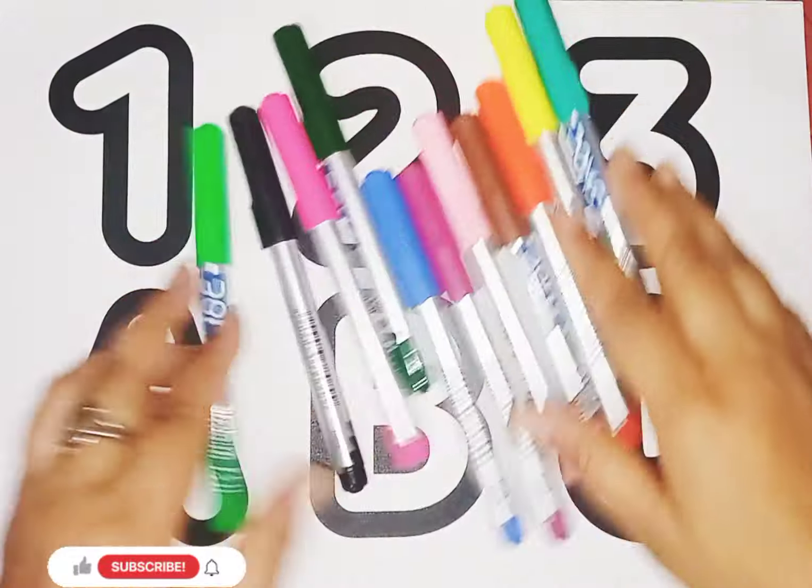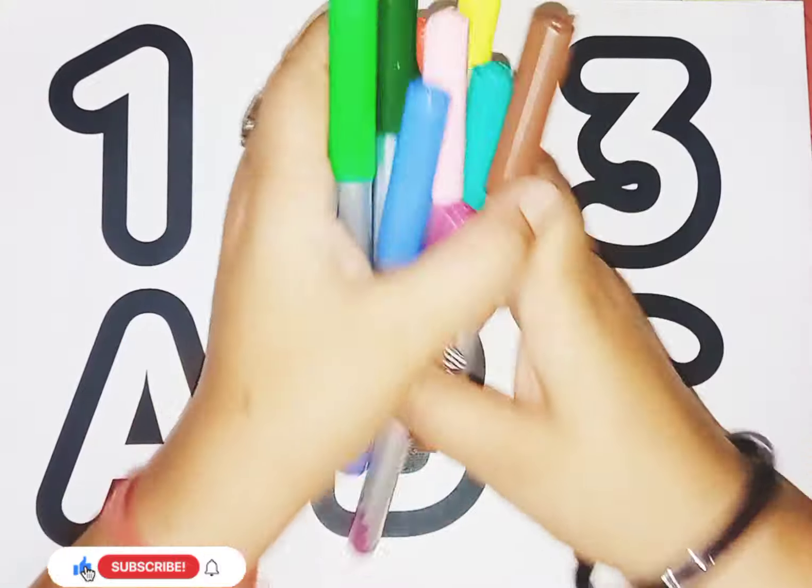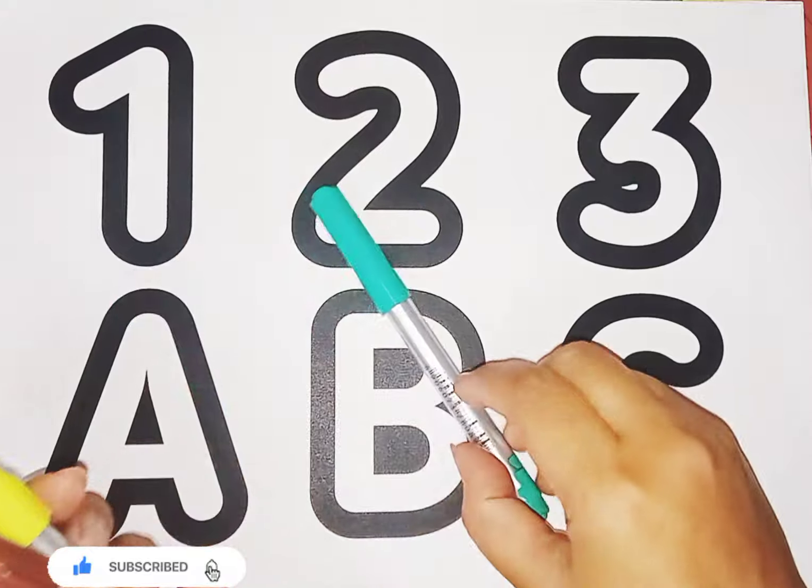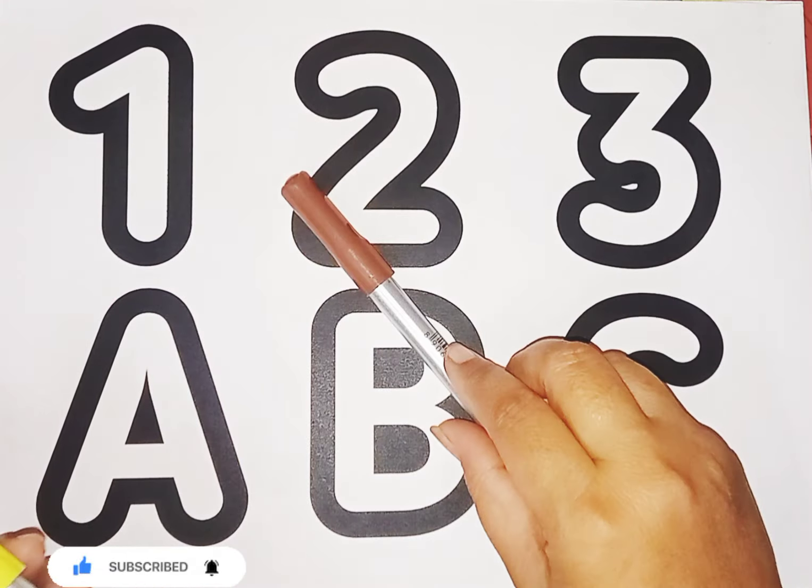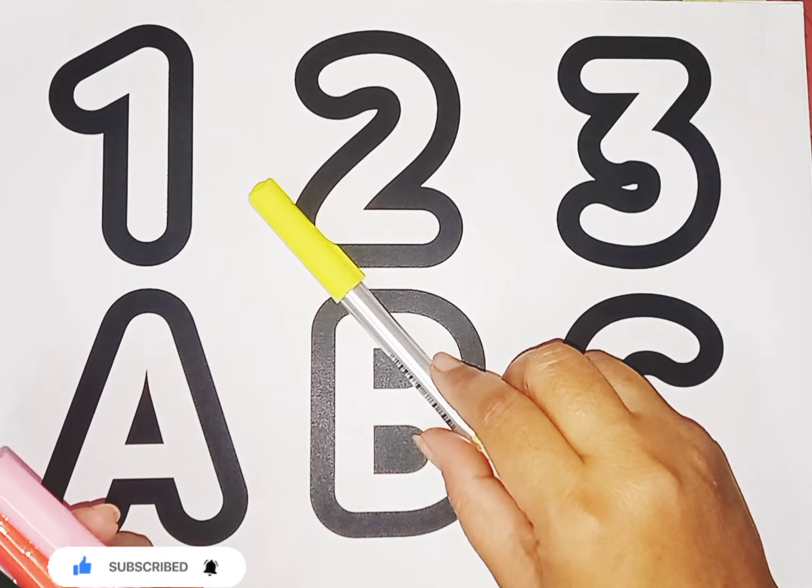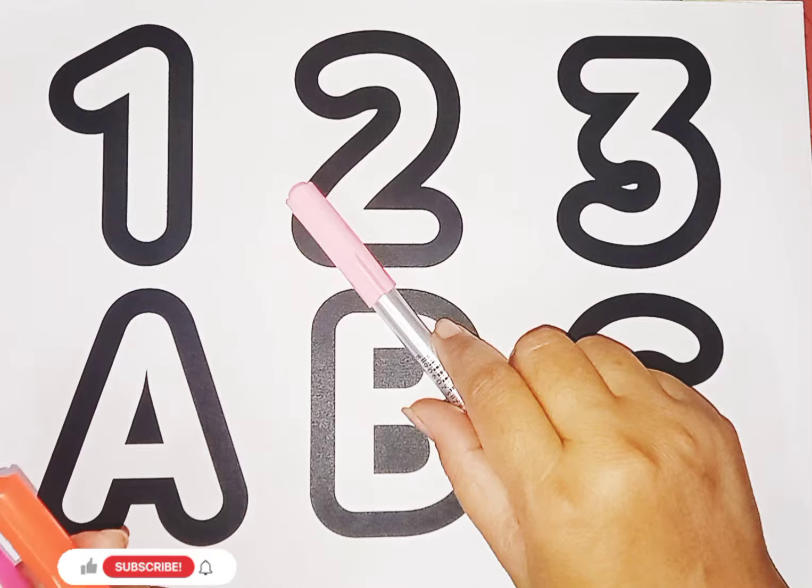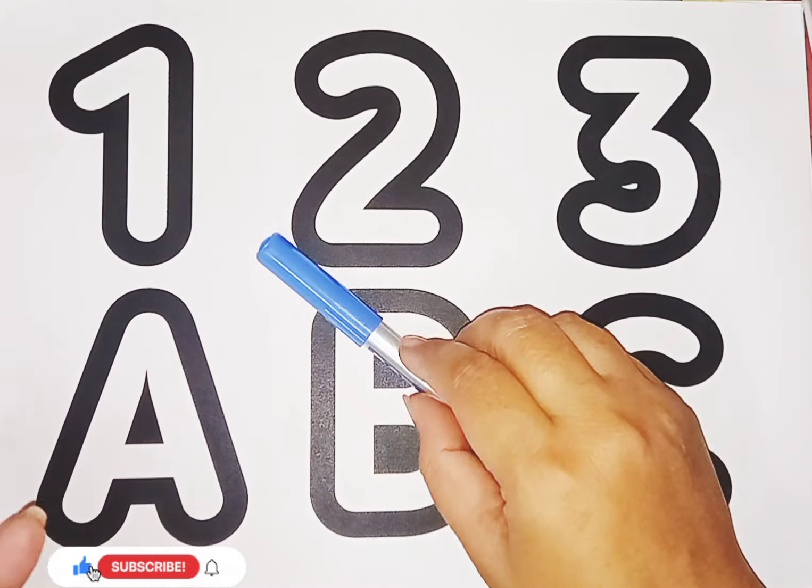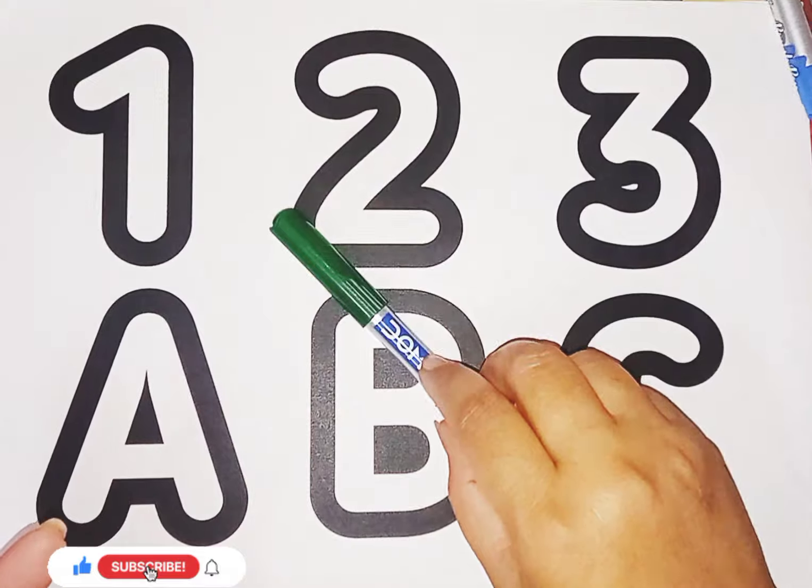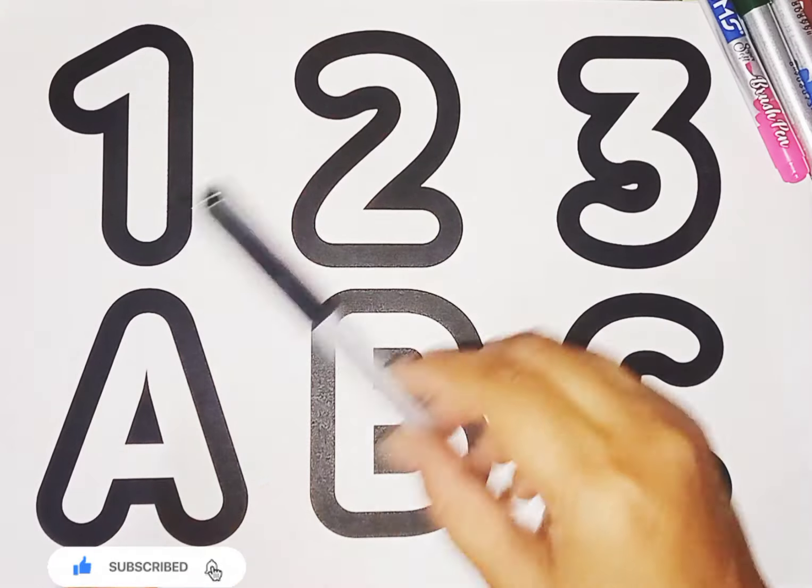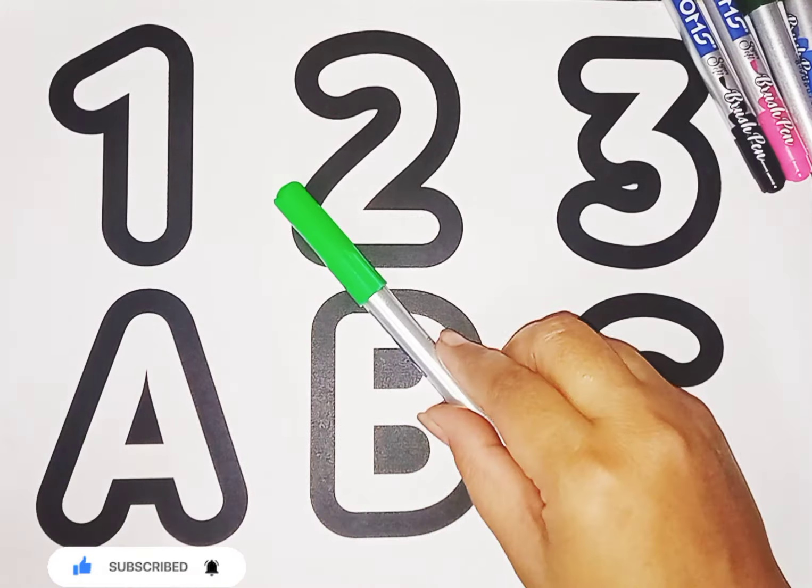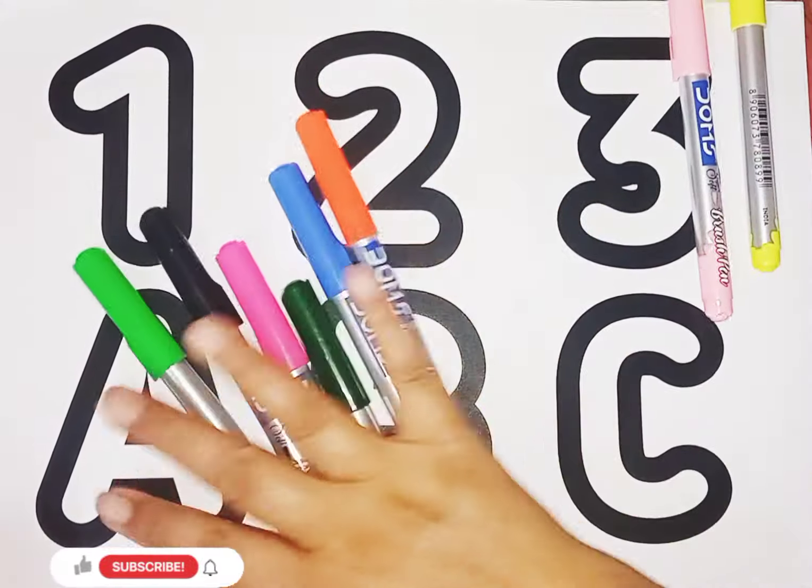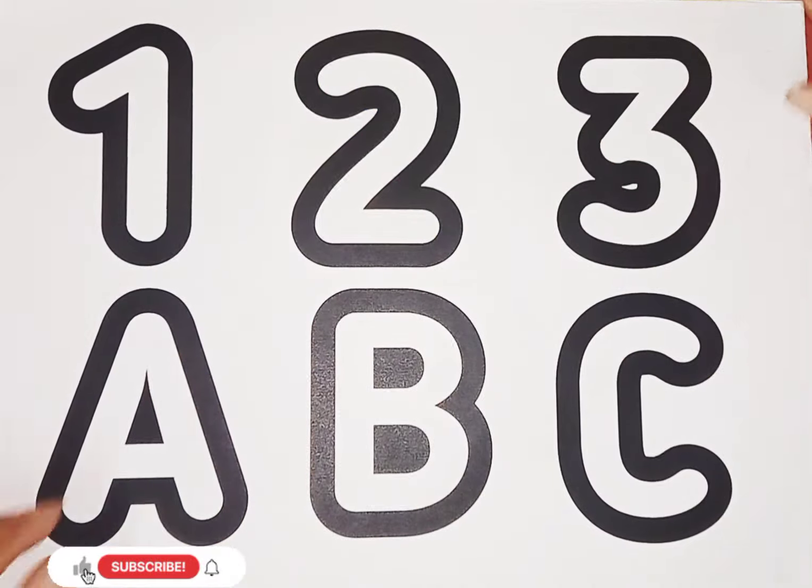These are colors. Let's learn some colors name. Wine color, Sea green color, Brown color, Parrot yellow color, Pink color, Orange color, Blue color, Dark green color, Pink color, Black color, Light green color. These are colors.